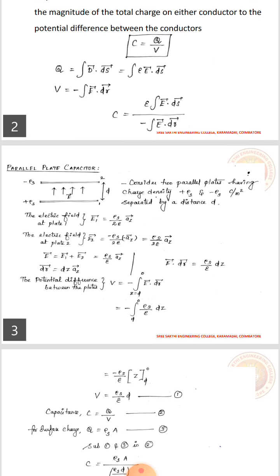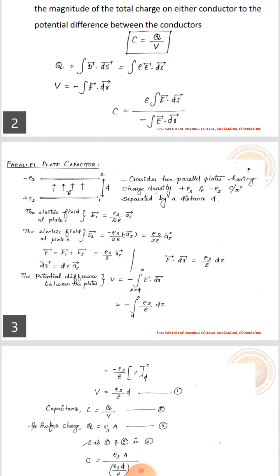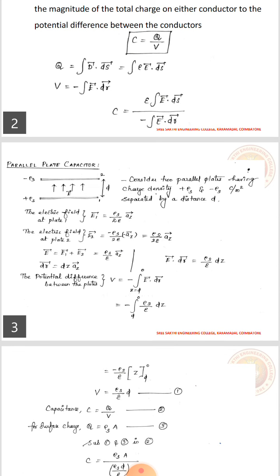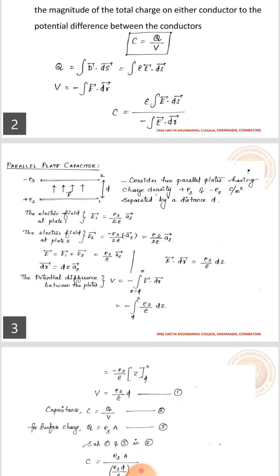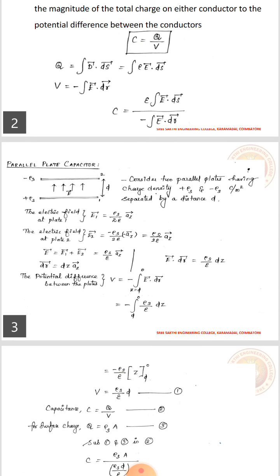Parallel plate capacitor: Consider two parallel plates having charge density of plus rho_s and minus rho_s coulombs per meter square, separated by a distance d. The electric field at plate 1 is given by E1 vector equals rho_s by 2 epsilon into a_z vector. Similarly, the electric field at plate 2 is given by minus rho_s divided by 2 epsilon into minus a_z vector. The minus indicates opposite direction, which can be written as rho_s divided by 2 epsilon into a_z vector.